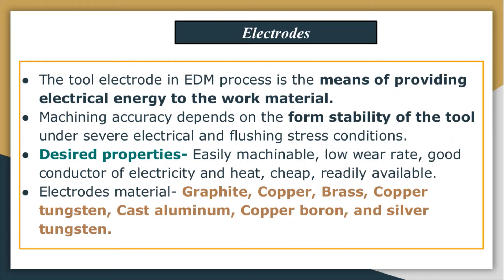The desired properties of electrode material are: it should be easily machinable — soft metal can be easily machined. It should have a low wear rate and be a good conductor of electricity as well as heat. It should be cheap and readily available. These are the desired properties of the tool material.